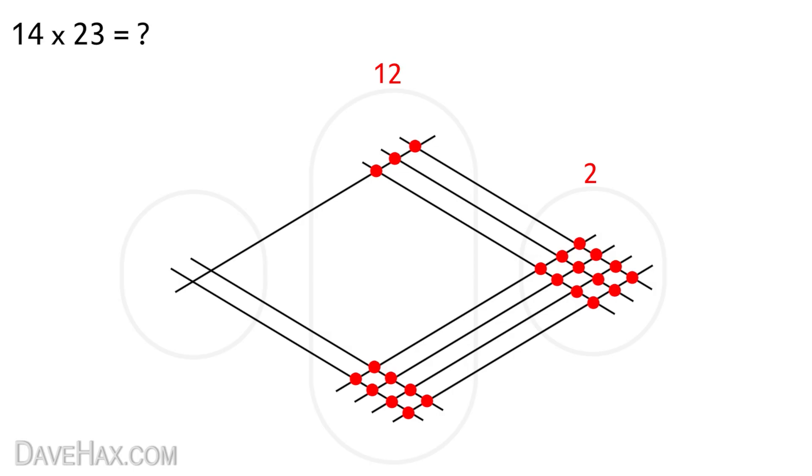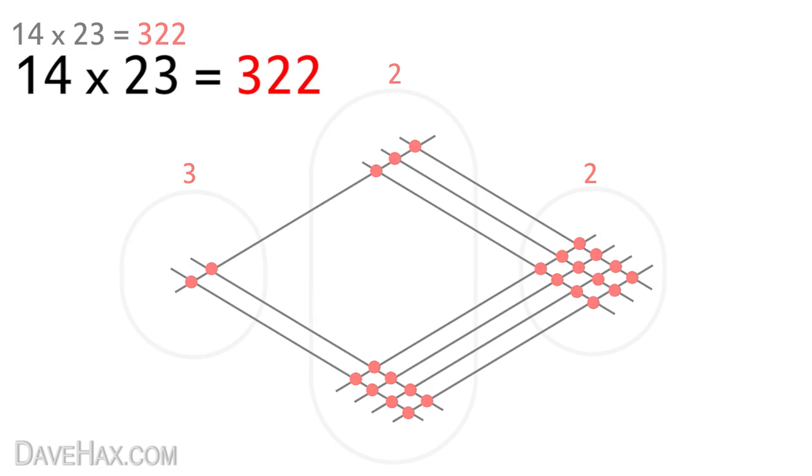Leave the last digit where it is, carry the first digit over to the next zone and add it to the number of dots in this zone. In this case 2 dots, giving us a total of 3. And that gives us our answer. 3 2 2. 14 multiplied by 23 is 322.